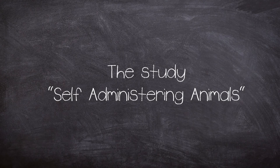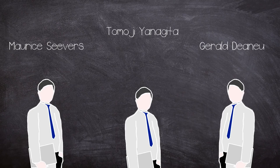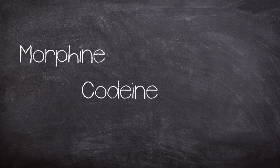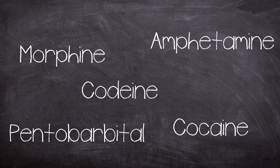Seavers teamed up with another two scientists, Gerald Dianno and Tomojo Yanagita, and planned the experiment to take place at Michigan University. The substances to be explored were morphine, codeine, cocaine, amphetamine, pentobarbital, ethanol, and caffeine.